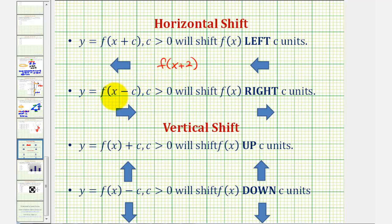If we have f of the quantity x minus c, this will shift f of x right c units. So if we have f of the quantity x minus two, this would shift f right two units.